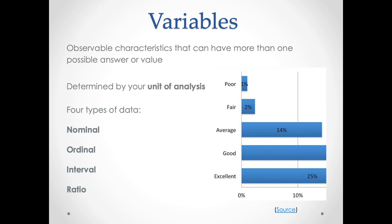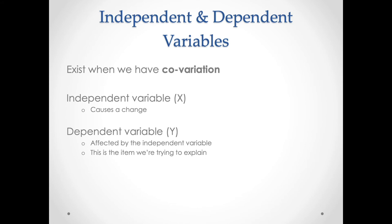You cannot do an analysis of the kind you would do with ratio data on nominal data, so you need to know the differences in the types of variables you're working with. Variables exist in two key categories I want to focus on. In order to observe a relationship between variables, you need co-variation — both variables need to vary together.